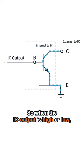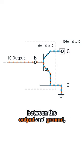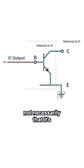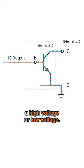So when the IC output is high or low, it's simply changing the impedance between the output and ground, not necessarily that it's a high voltage or low voltage.